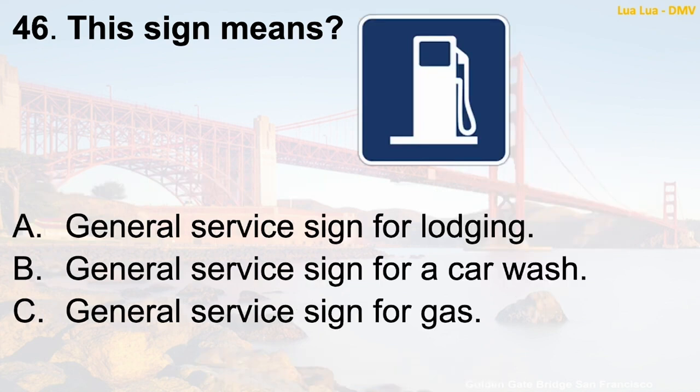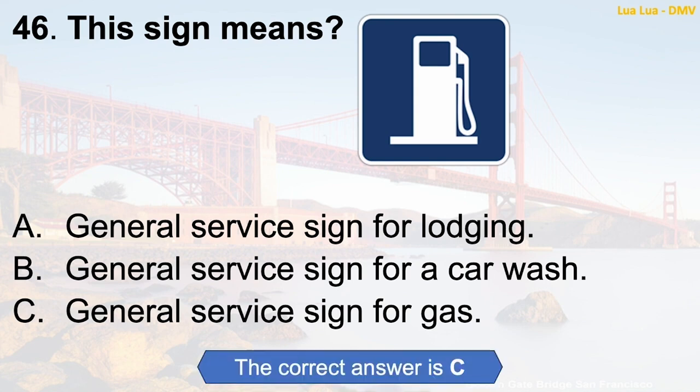Question 46: This sign means — A. General service sign for lodging. B. General service sign for a car wash. C. General service sign for gas. The correct answer is C: General service sign for gas.